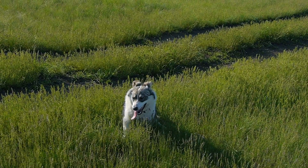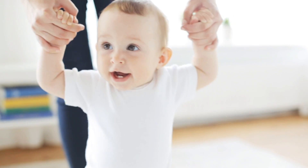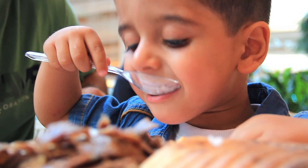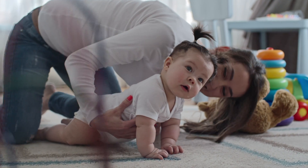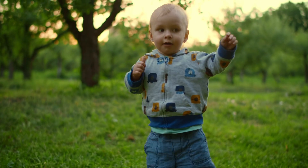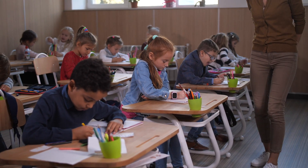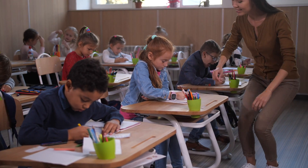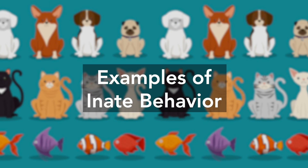A dog is taught where it will go to the bathroom. You were taught how to walk and eat with utensils. A baby is taught how to crawl and then how to walk. All these are examples of learned behavior because someone had to teach the dog, you, or the baby how to do those things.